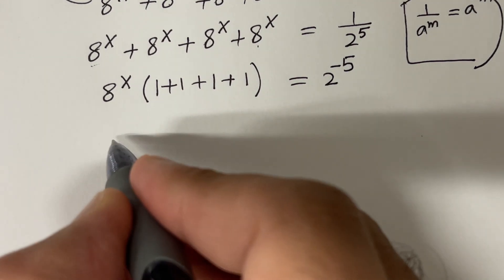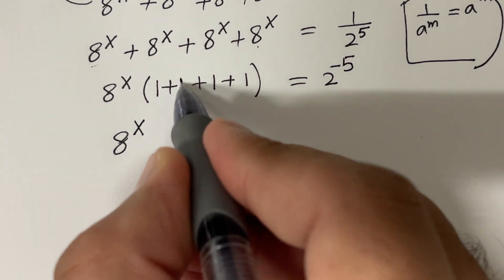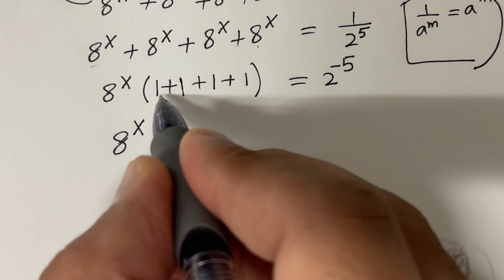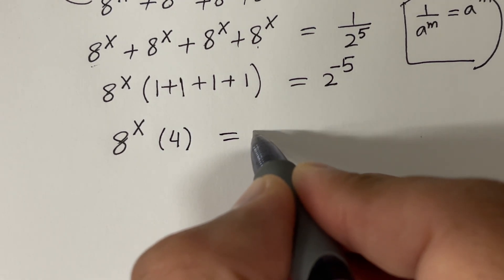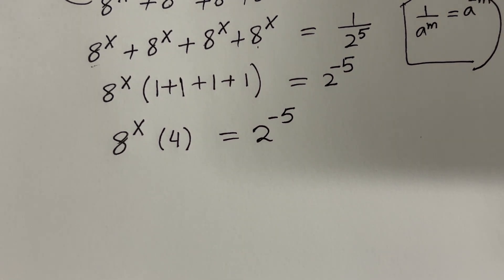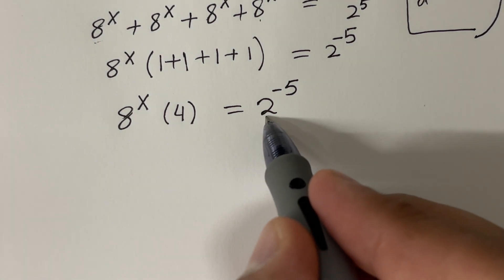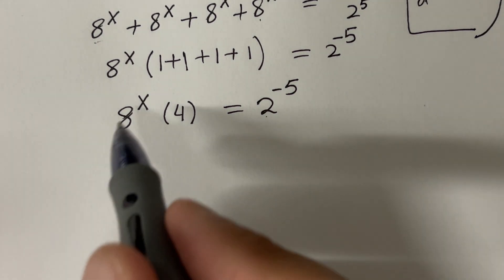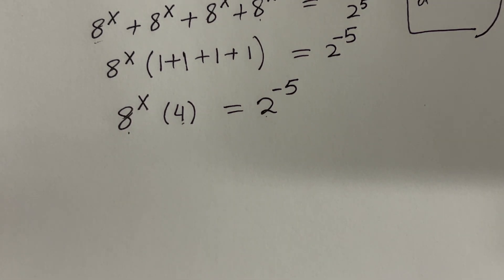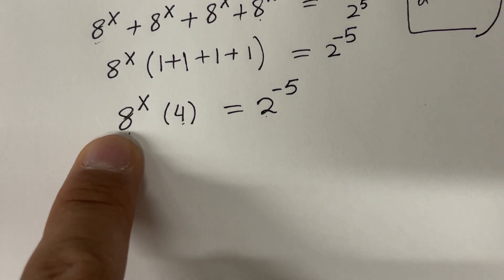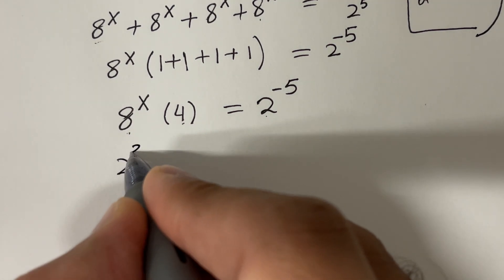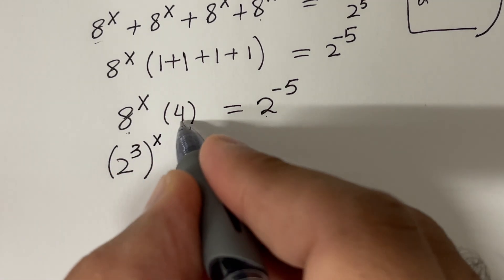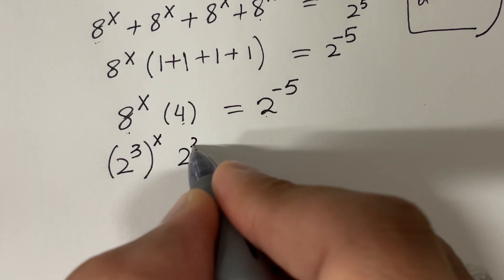So now we have 8 raised to the power x times 4 — since 1 plus 1 plus 1 plus 1 is 4 — and the right hand side is 2 raised to the power minus 5. Since the right hand side has base 2, it will be easy to convert everything in terms of base 2. So: 8 can be written as 2 raised to the power 3, and 4 can be written as 2 raised to the power 2. The right hand side is 2 raised to the power minus 5.